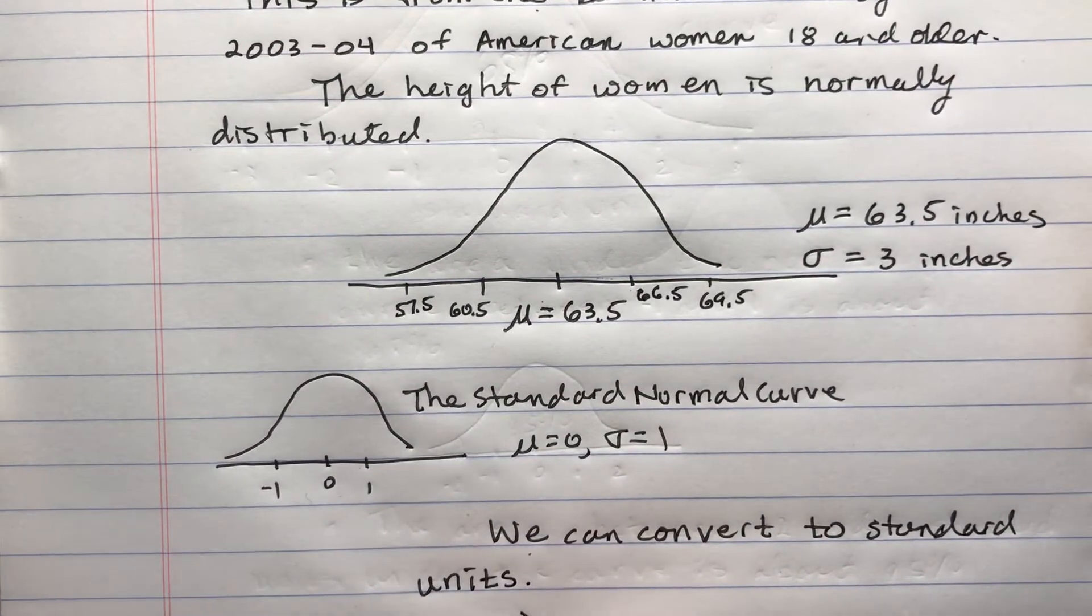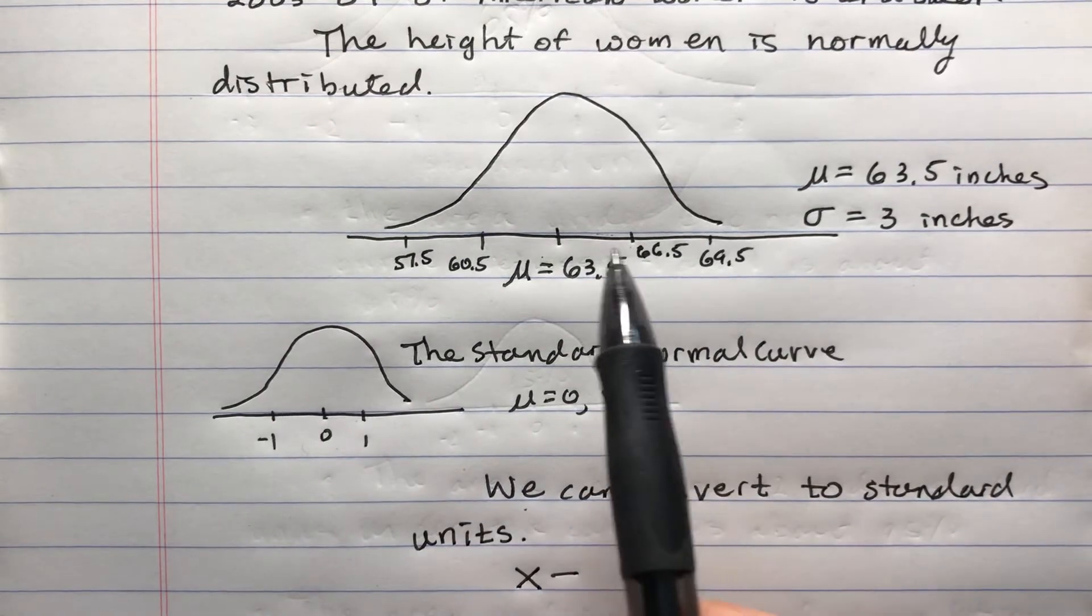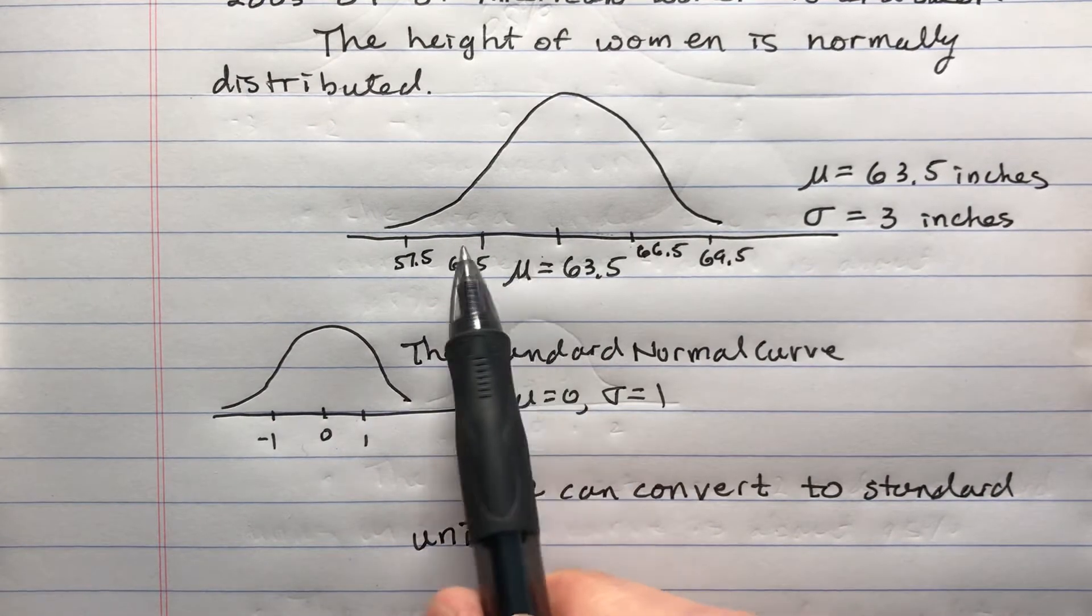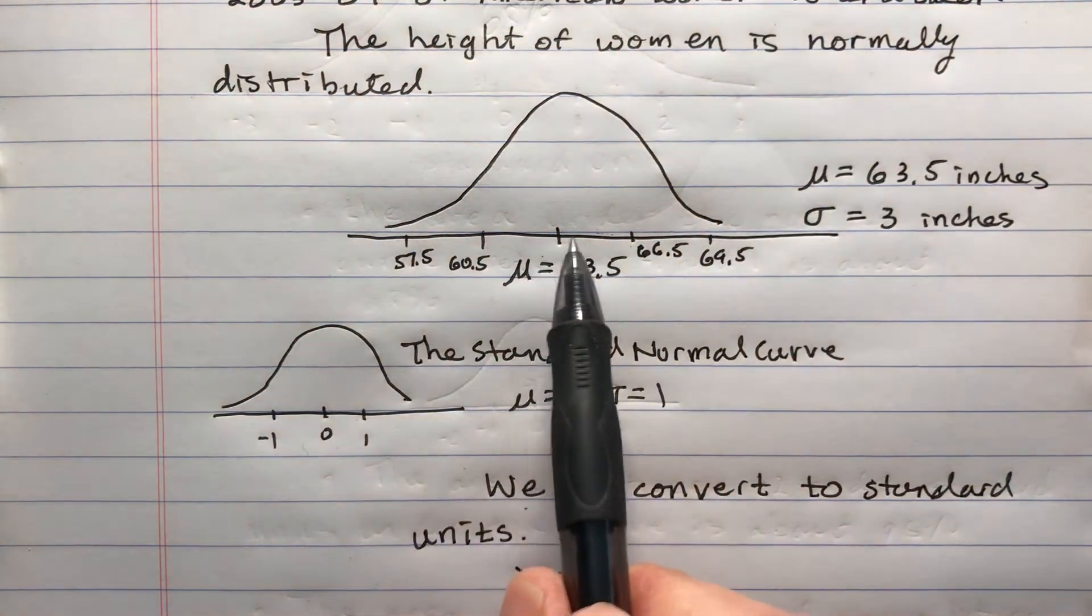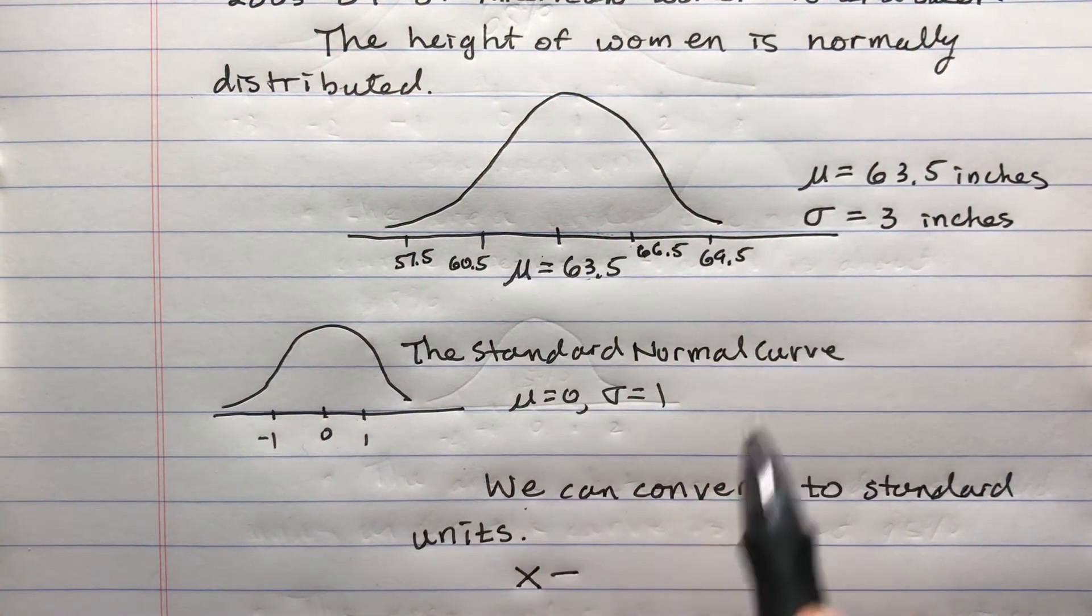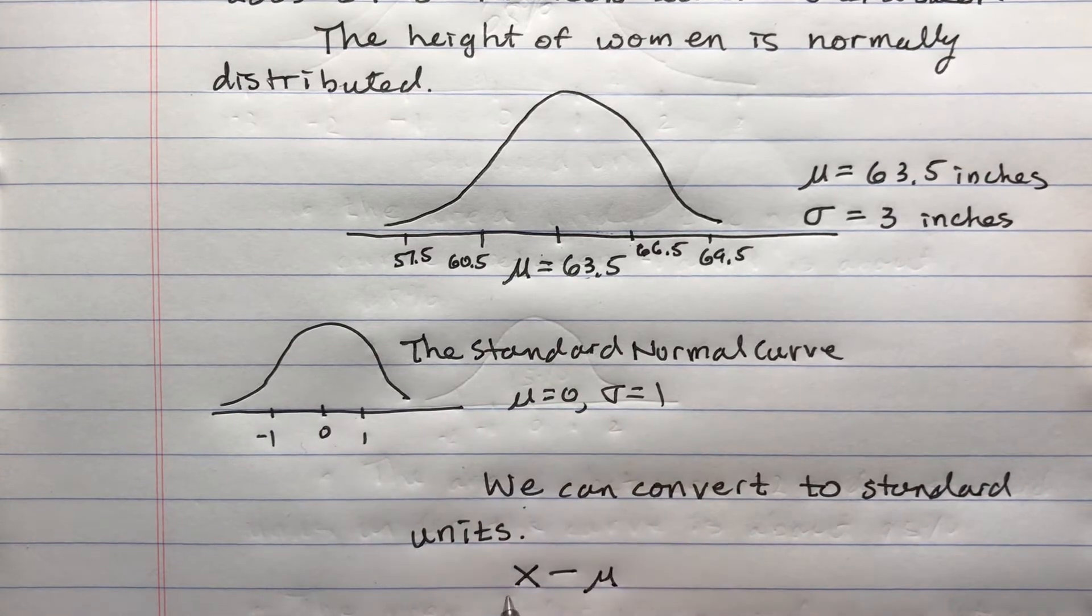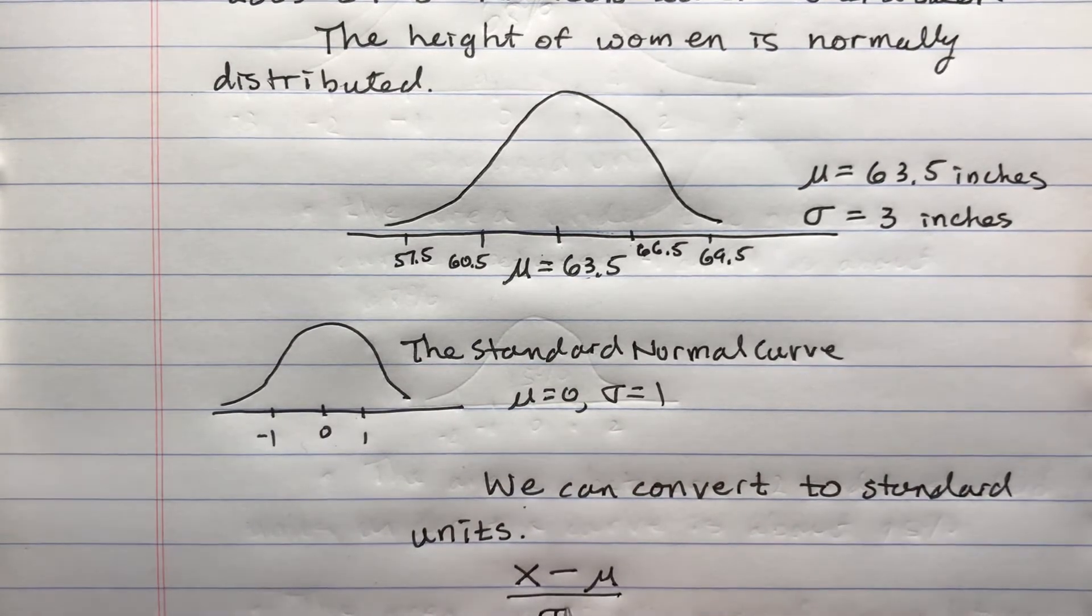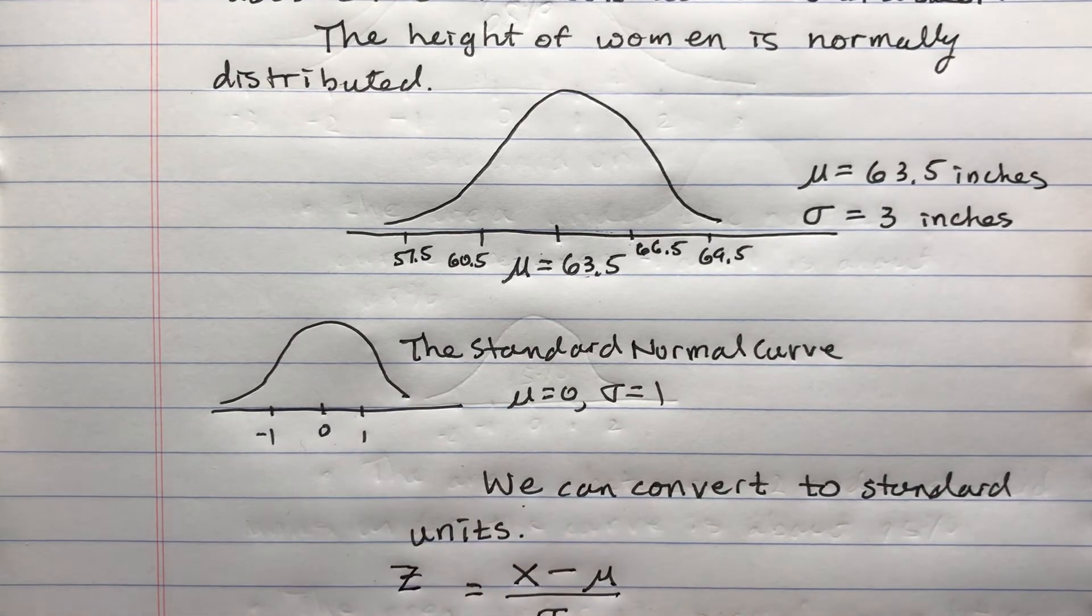First, if the numbers for height are given by x, I'm going to shift this curve by subtracting the mean, and then divide by standard deviation, and this gives what they call the z-value.